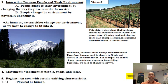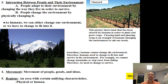The third theme of geography is interaction between people and their environment. There are two ways that people interact with their environment. They can either adapt to their environment by changing the way that they live in order to survive, or they can change the environment by physically changing it. So people can either change themselves to survive, or they can change their environment to survive.